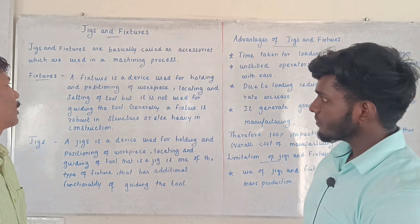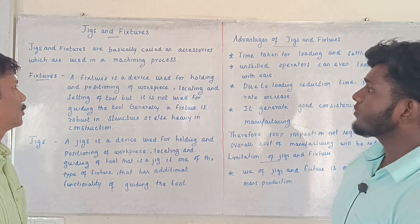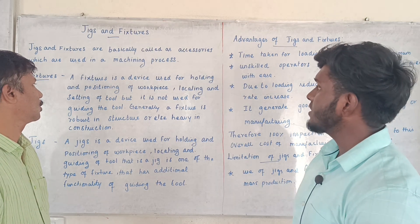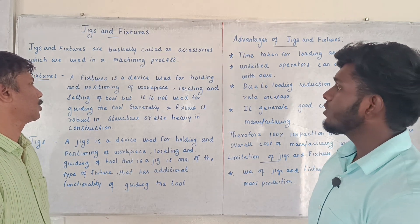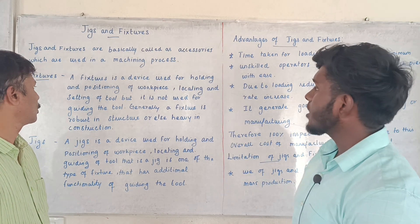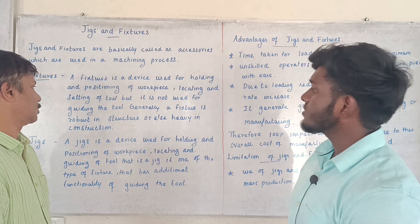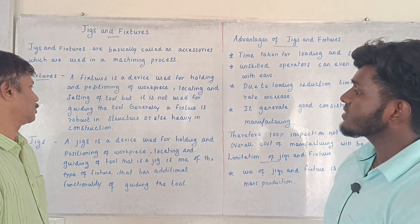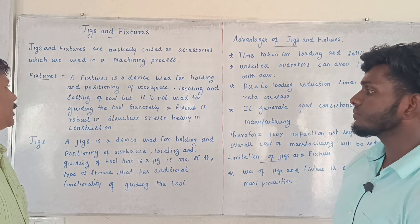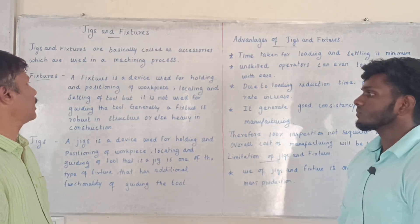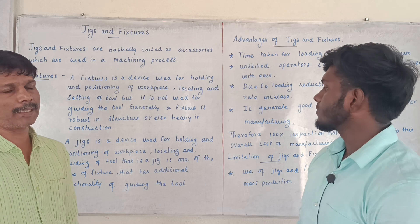What is a Fixture? A fixture is a device used for holding and positioning of a workpiece, and for locating and setting of the tool, but it is not used for guiding the tool. Generally, a fixture is robust in structure and heavy in construction.